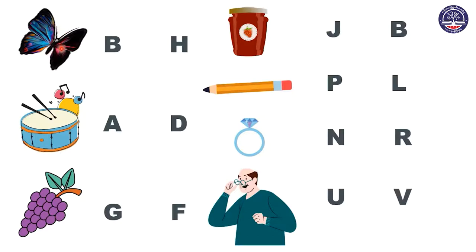Does butterfly start with letter B or H? Butterfly starts with letter B. Correct. So we are going to circle letter B. Great job.